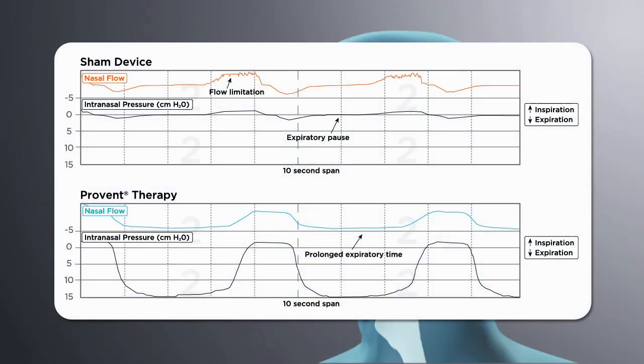These PSG images show a patient with and without ProVent Therapy. The top panel shows an untreated patient. There is clear inspiratory flow limitation. Intranasal pressure is zero after expiration, and there is a long end-expiratory pause.